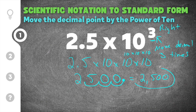So that is 2.5 times 10 to the third converted to standard form. When we did the problem as 2.5 times 10 times 10 times 10, we still end up with 2,500 — it doesn't change the answer. It just changes how you think about the problem so you don't get confused about which way to move the decimal.